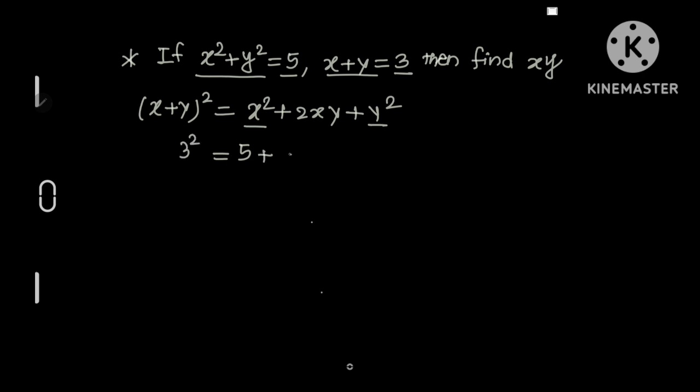We don't know xy yet. Now, 3² is 9, so 9 - 5 = 2xy. Therefore, 9 - 5 = 4, and 4 = 2xy.